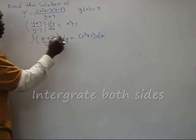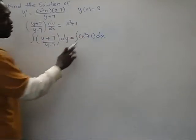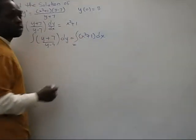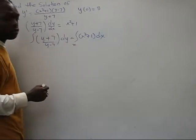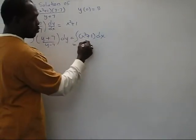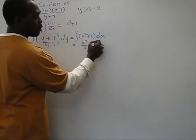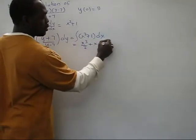Now I'm going to integrate both sides. This side is easier to integrate, so I have X cubed over 3 plus X plus C.